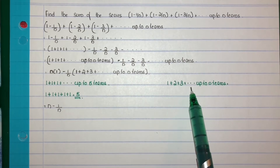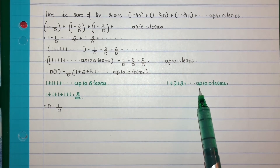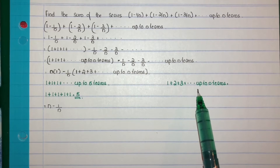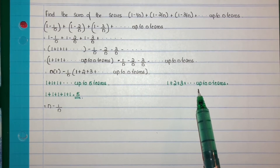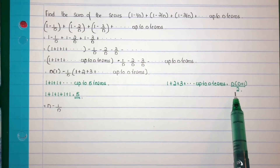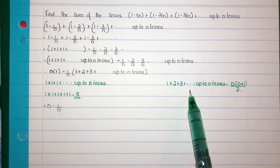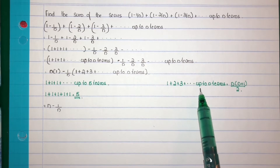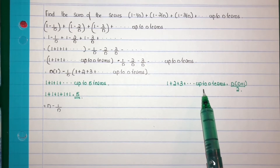Now, 1 plus 2 plus 3 plus etc. up to n — this is the sum of n natural numbers, the sum of n consecutive natural numbers. That is equal to n(n+1)/2.